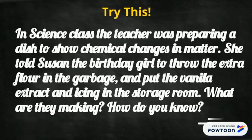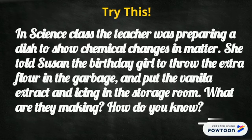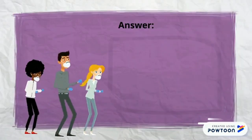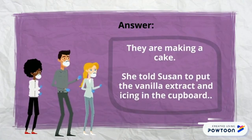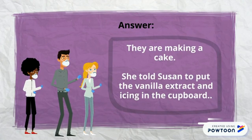Let's do another one. In science class, the teacher was preparing a dish to show chemical changes in model. She told Susan, the birthday girl, to throw the extra flour in the garbage and put the vanilla extract and icing in the storage room. What are they making? How do you know? They are making a cake. She told Susan to put the vanilla extract and the icing in the cupboard. Good job, students.